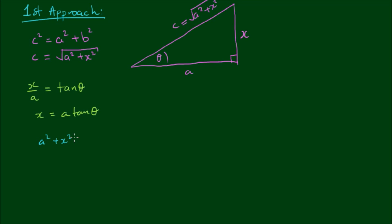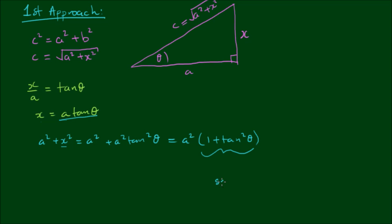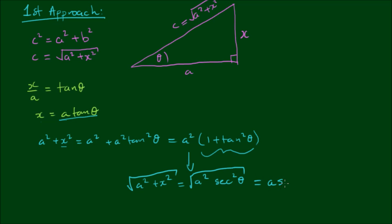With a squared plus x squared, we can write this as a squared plus a squared tan squared theta, substituting a·tan θ for x. Factoring out a squared gives a squared times the quantity 1 plus tan squared theta. Now 1 plus tan squared theta equals sec squared theta. So a squared plus x squared equals a squared sec squared theta, and therefore the square root of a squared plus x squared equals the square root of a squared sec squared theta, which equals a times sec theta.